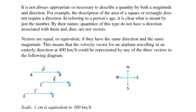Vectors are equal or equivalent if they have the same direction and the same magnitude. This means the velocity vector for an airplane traveling eastward at 400 kilometers per hour could be represented by any of three vectors in the diagram. All three vectors have the same modulus — they just start at different points and end in different places, but their magnitude is the same.